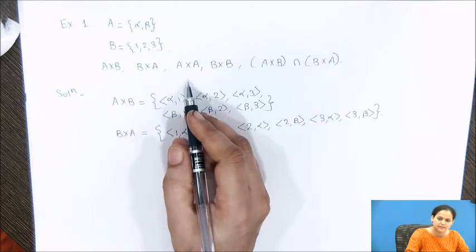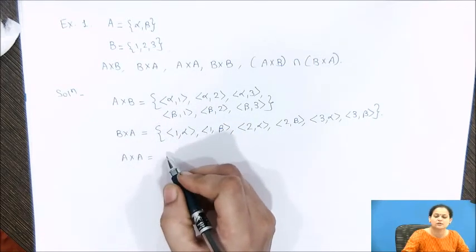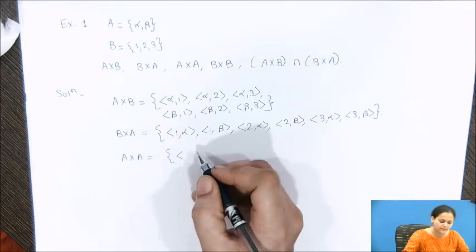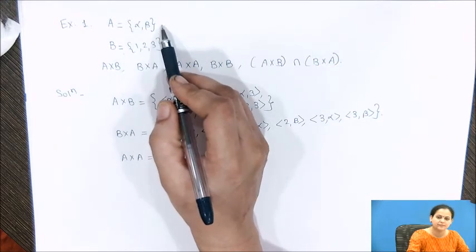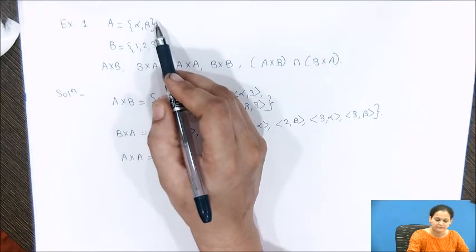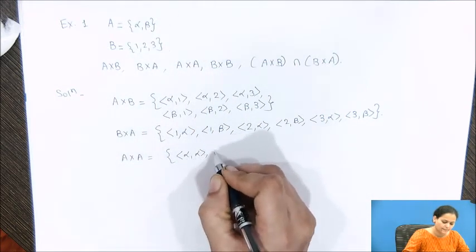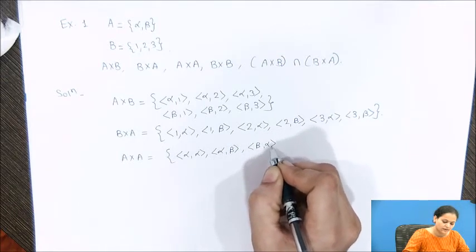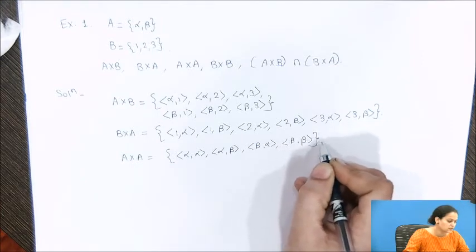Next, we have been asked for A×A. This is the Cartesian product of the given set with itself. So in both positions of an ordered pair, elements come from the same set A. Taking α and β combined with α and β itself, we get (α,α), (α,β), (β,α), and (β,β). So this is the answer for A×A.